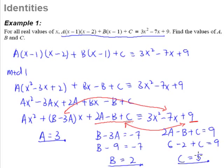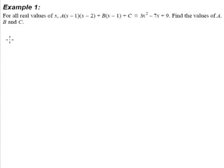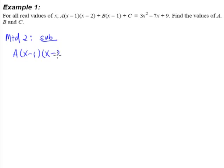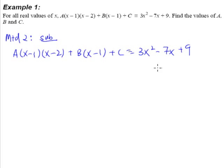This is how we use Method 1 — expand everything and then compare side by side. Now let's take a look at Method 2. Method 2 is different from Method 1, the expansion method. Method 2 is the substitution method. Same question, different method — we solve for A, B, and C without having to expand everything.